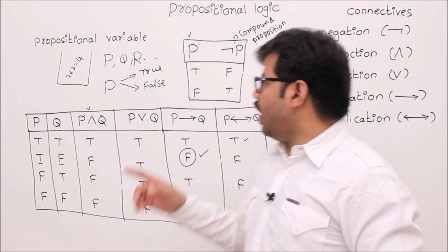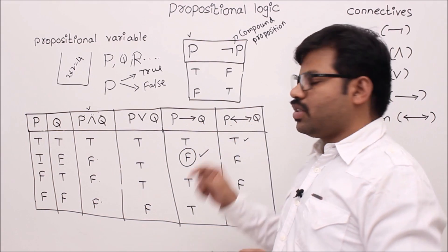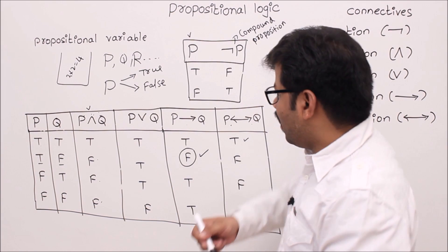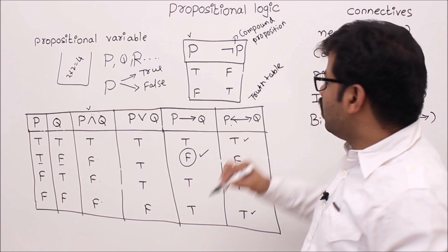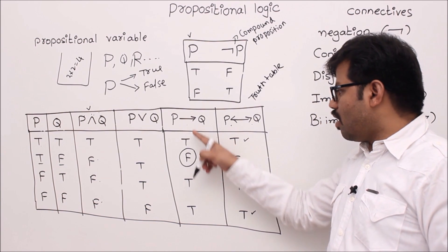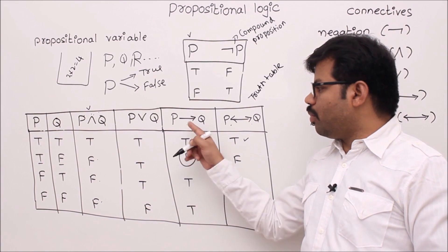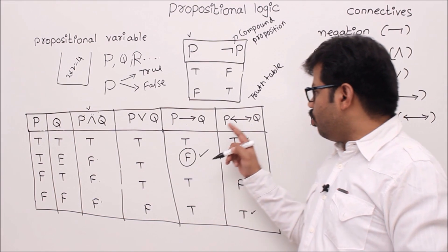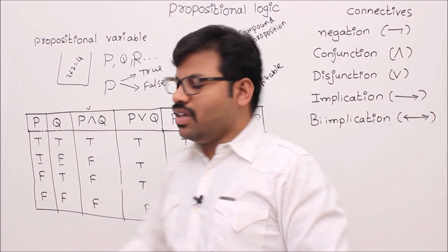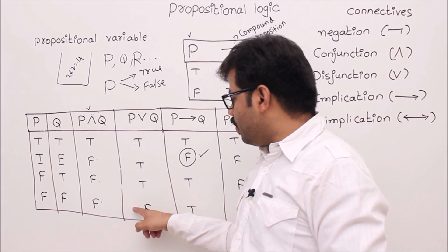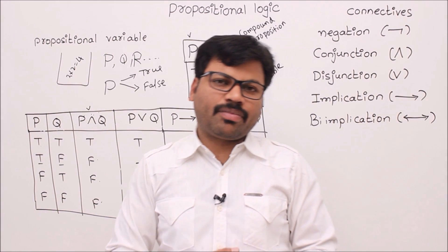A truth table is nothing but information about a compound proposition. A table which stores information about P→Q, P↔Q, P∧Q — these are called truth tables of the respective operators. It is an information table about connectives.